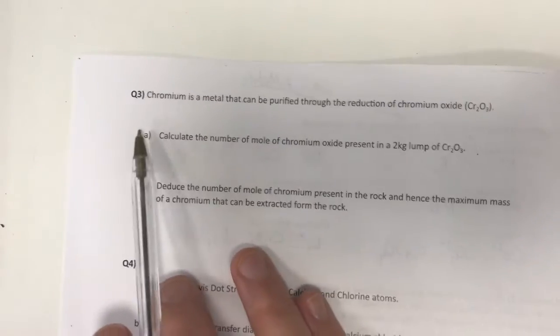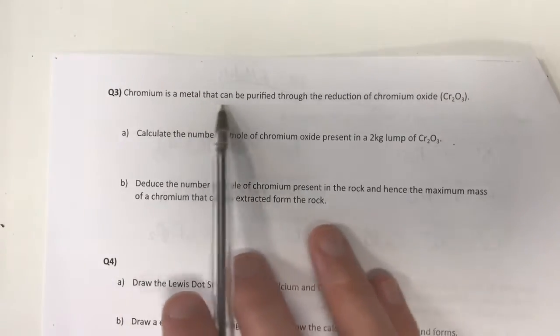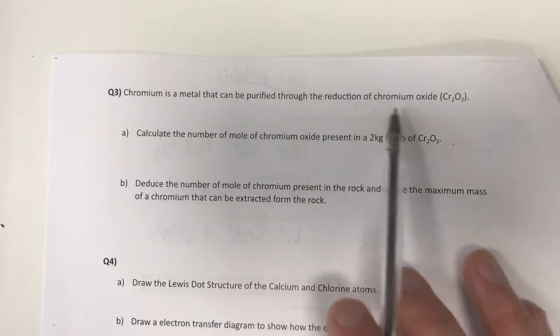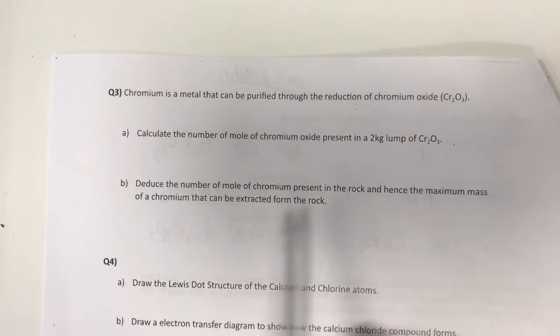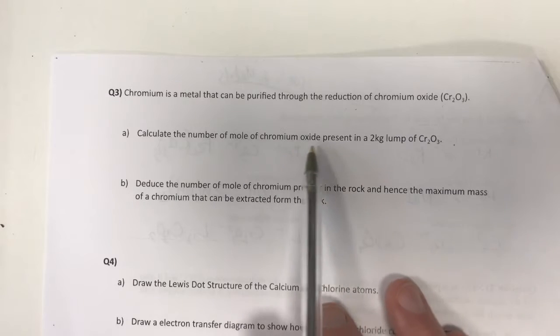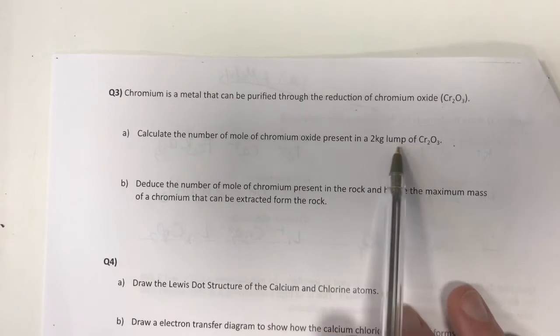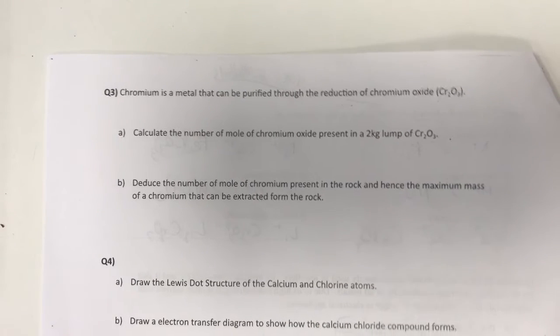Question number three, and this one is about chromium, a metal that can be purified through the reduction of chromium oxide, which is Cr2O3. Calculate the number of moles of chromium oxide present in a 2 kilogram lump of Cr2O3.